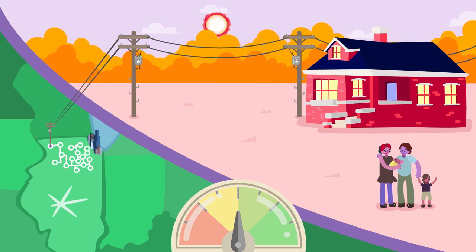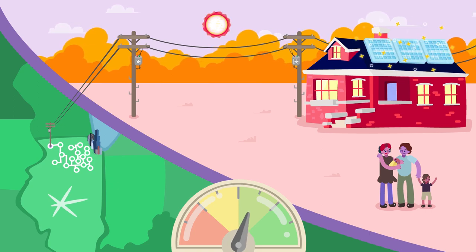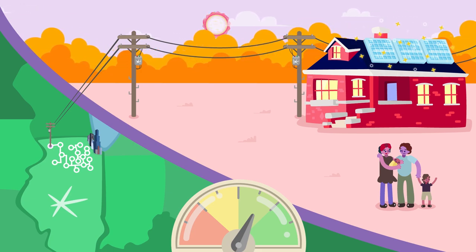Solar panels are now less expensive and easier to install at your home if you choose. You can generate some of your home's electricity by installing solar panels on your roof. ComEd will help ensure your solar panels are connected with the smart grid.